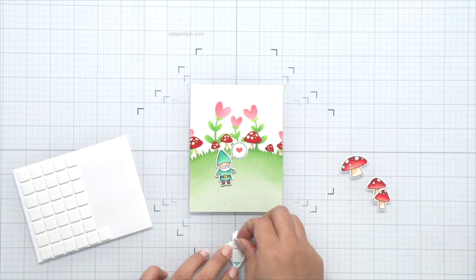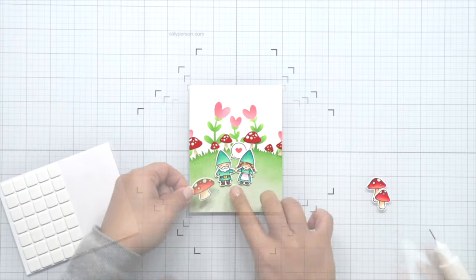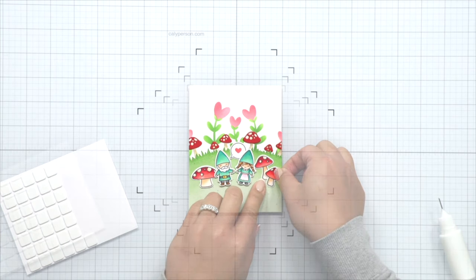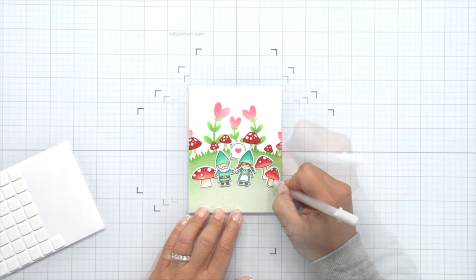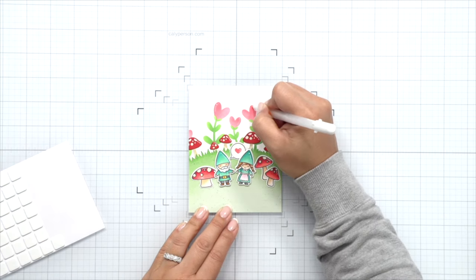Then for the three little mushrooms, I'm just going to add them to the sides of the gnomes and tucking them behind to finish them off. I'm pretty much done with my scene here, but I decided to use my Sakura jelly roll pen and add some white gel highlights all over the images. I'm adding them to the Copic images as well as the die cut images and the stenciled images.